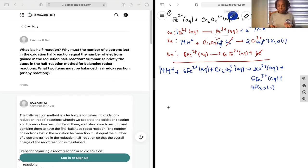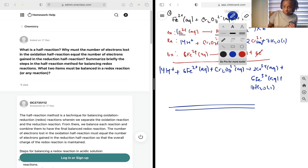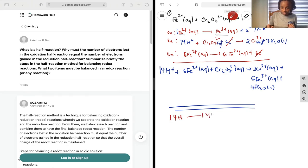This is our final balanced redox reaction. Let's do the final step of double checking. 14H, 14H on both sides. 6 iron, 6 iron. Oxygen, 7 oxygen, 7 oxygen. 2 chromium, 2 chromium.